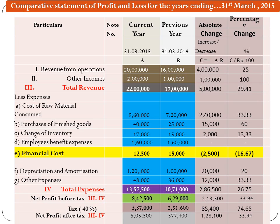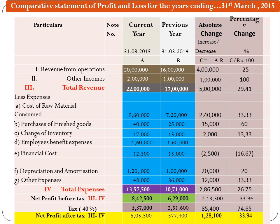Another example: Financial Cost — current year ₹12,500, last year ₹15,000. Absolute change is negative, so the amount ₹2,500 is shown in brackets. Percentage change = 2,500 ÷ 15,000 × 100 = 16.67%, also shown in brackets because it is a negative figure. Finally, Net Profit After Tax: ₹5,50,000 minus ₹3,77,400 equals ₹1,28,100, and percentage change is 33.94%.